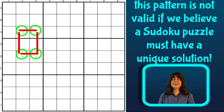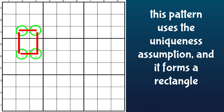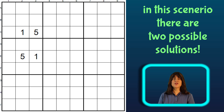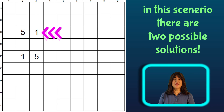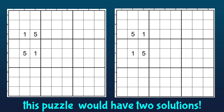This pattern is not valid if we believe that a Sudoku puzzle has to have a unique solution. That's why this pattern is called a unique rectangle — because it uses the uniqueness assumption and it forms a rectangle. In this scenario, the final solution could look like this, with 1 then 5 in row C and 5 then 1 in row E. But it could also be flipped with 5 then 1 in row C and 1 then 5 in row E. Either configuration would solve the puzzle without affecting any other numbers in the grid, and the puzzle would have two solutions, which is not considered valid.